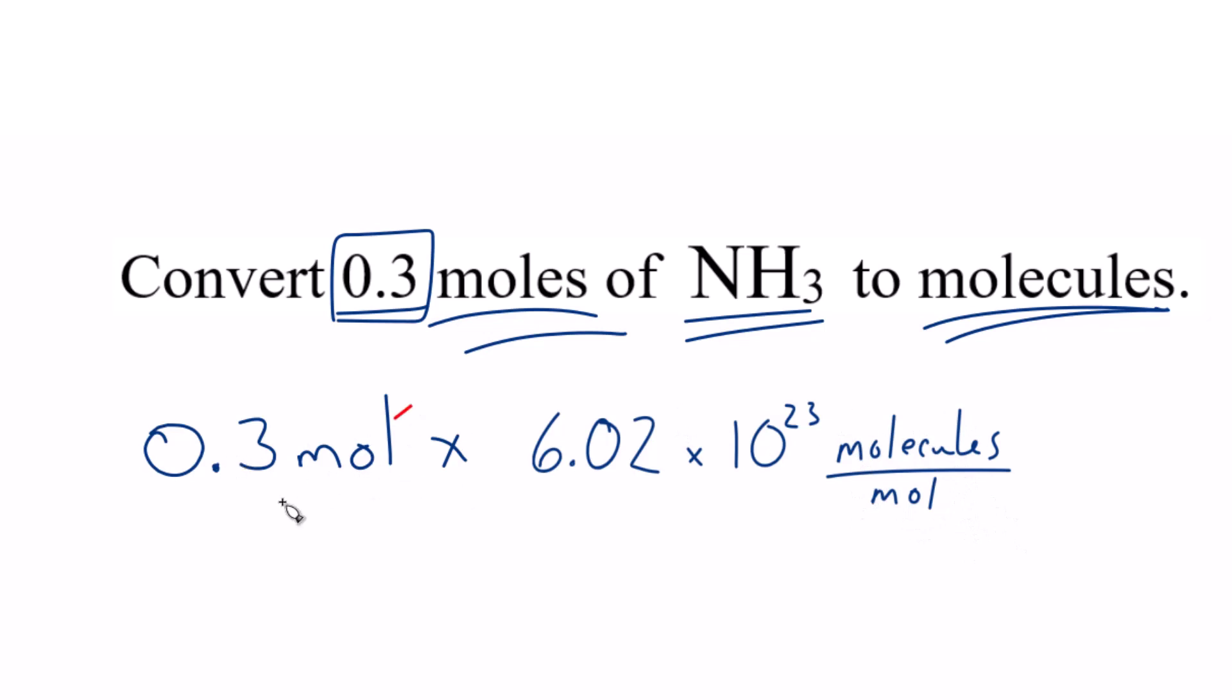So when we multiply, we have moles on the top and the bottom. They cancel out. We're left with molecules because that's what we're looking for. So we know we've done this correctly.